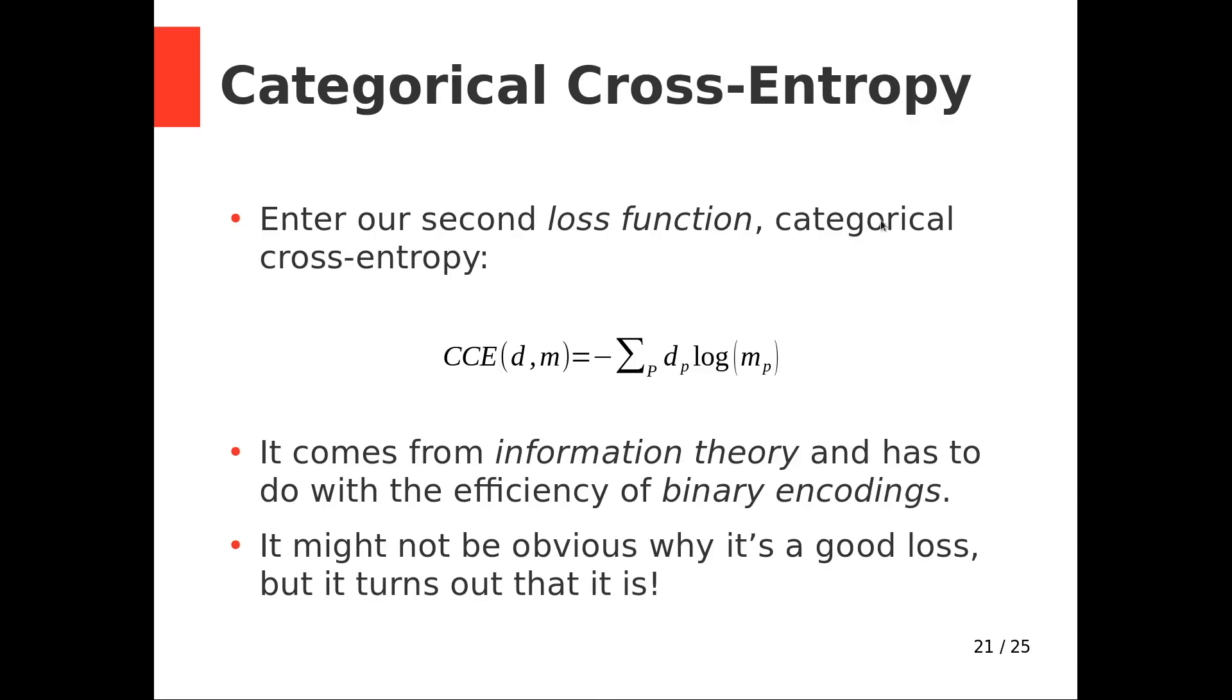So introduce categorical cross-entropy. Categorical cross-entropy looks like this. And if this looks like painful, annoying math you don't want to do, you don't have to. TensorFlow will do it for you. But this comes from information theory, where this thing is a measure of the efficiency of binary encodings.